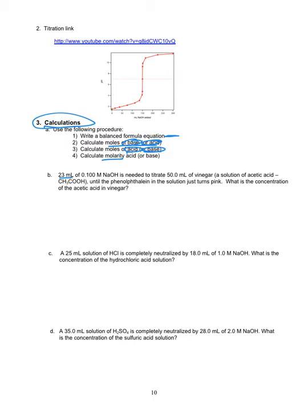So let's take a look at B. 23 milliliters, that's the volume of this molarity of base. So we have two parts. We have the volume and the molarity is needed to titrate 50 milliliters. This is a volume of vinegar. So vinegar is acetic acid, that CH3COOH one. Until the phenolphthalein in the solution turns pink, what's the concentration of the vinegar? So this is our question right here. We want to know what the concentration of that vinegar is. So first step is to write that balanced equation. So we write out CH3COOH plus, we are adding to that sodium hydroxide. So the CH3COOH is our acid. That's acetic acid plus sodium hydroxide.